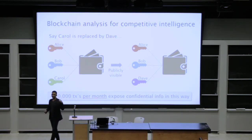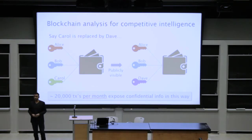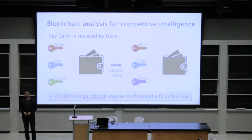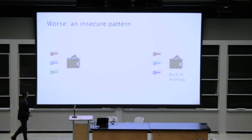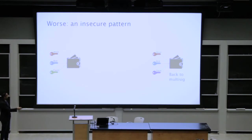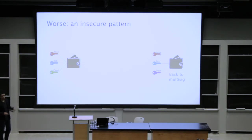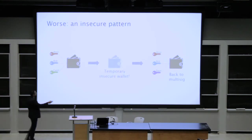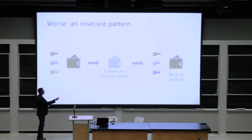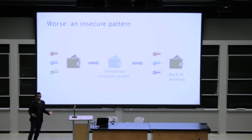But it gets worse. Not only are companies exposing private information they shouldn't be, many entities are also weakening their security through incorrect use of multisig. Instead of a single transaction transferring from wallet A to wallet B, companies temporarily route through a traditional pay-to-pubkey-hash address, losing the benefits of multisig and temporarily transferring all funds to a single machine — a single point of control and a single point of failure. If there's malware on that machine, they would lose all of those funds.